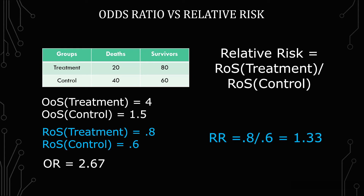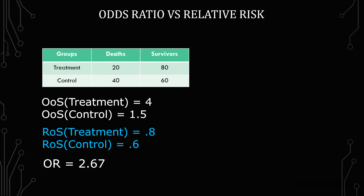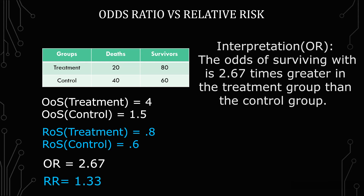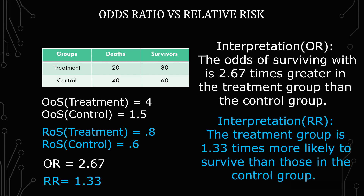Make sure that when you're doing these calculations you're consistent — you don't want to do the odds ratio of death and the relative risk of surviving. For the odds ratio interpretation: the odds of surviving with treatment is 2.67 times greater in the treatment group than control. For relative risk, the treatment group is 1.33 times more likely to survive than those in the control group.